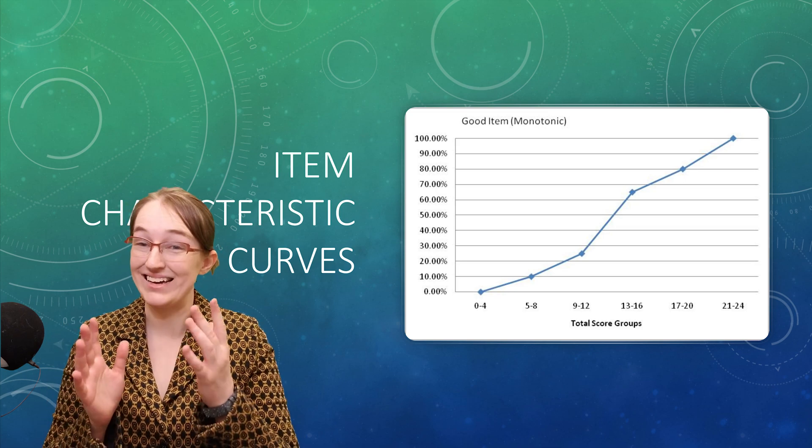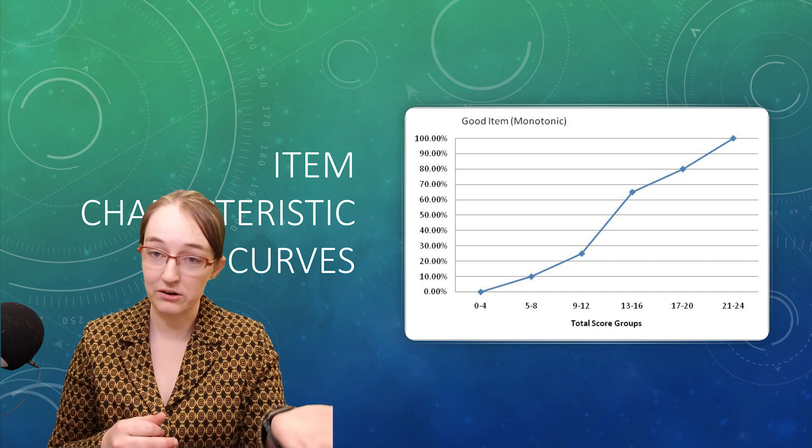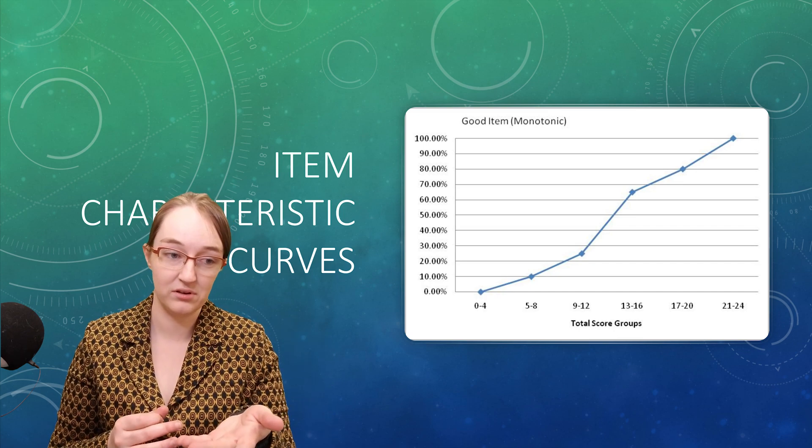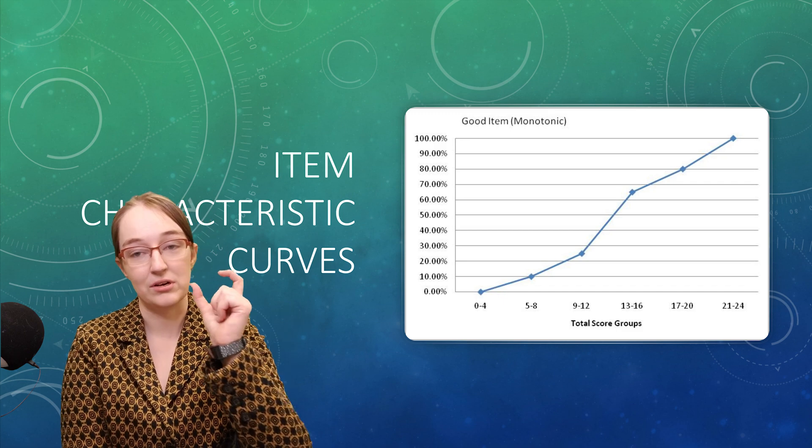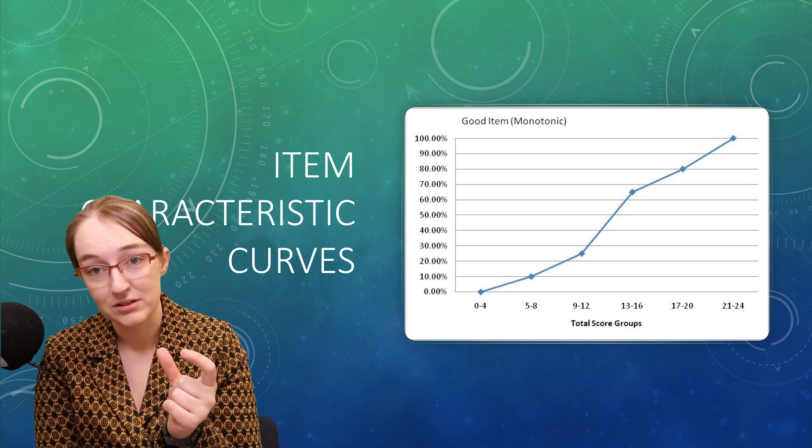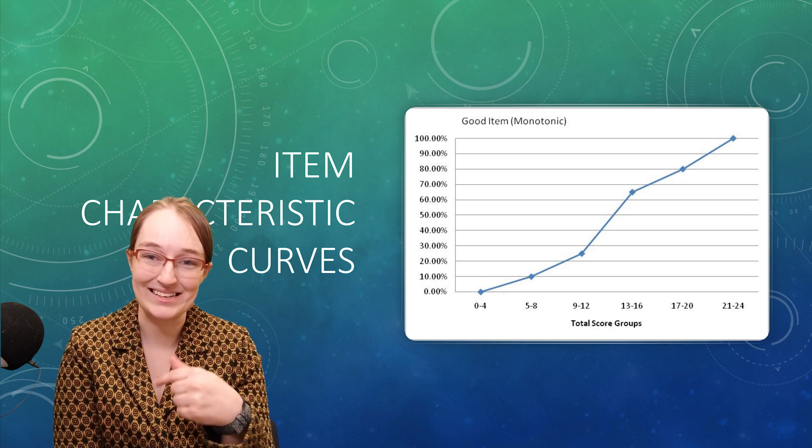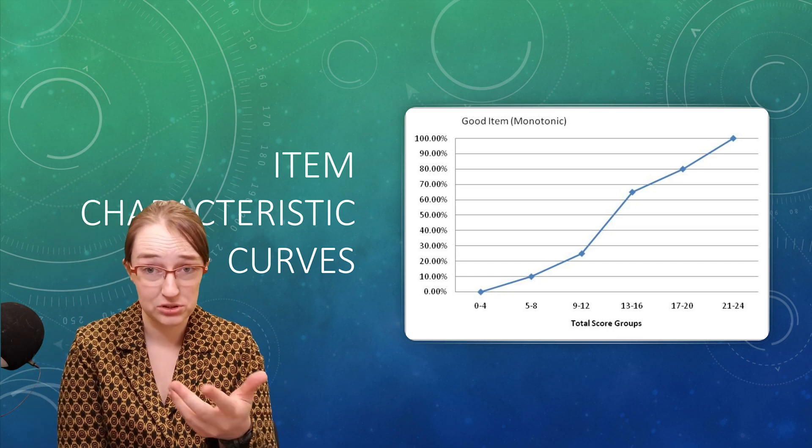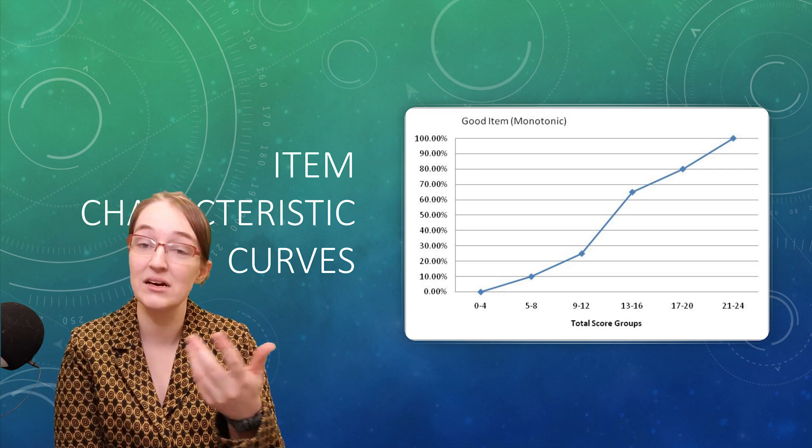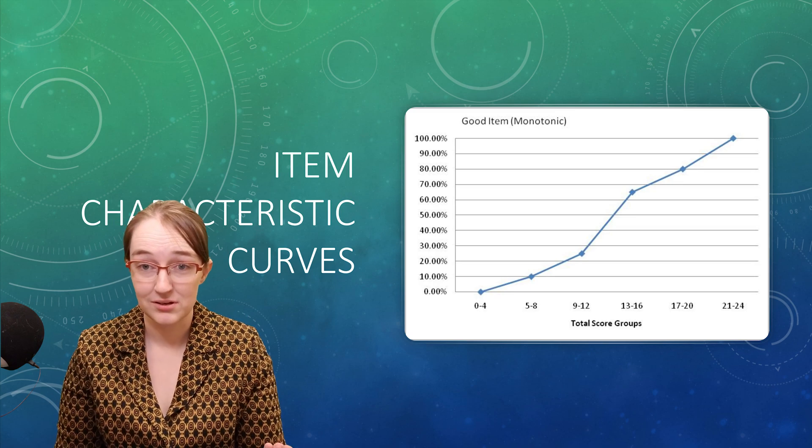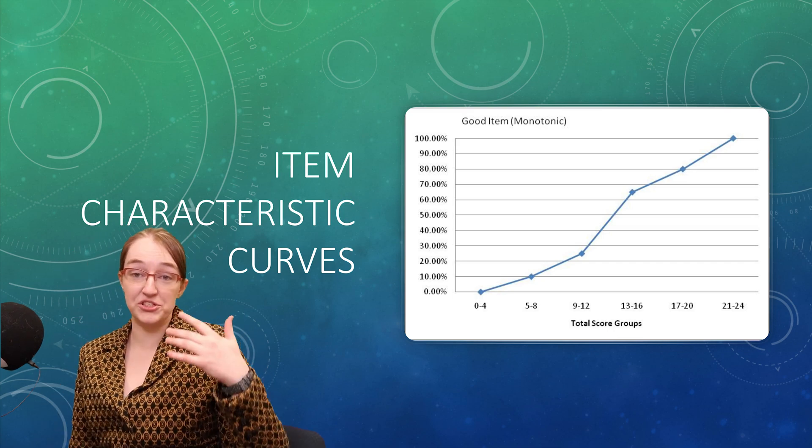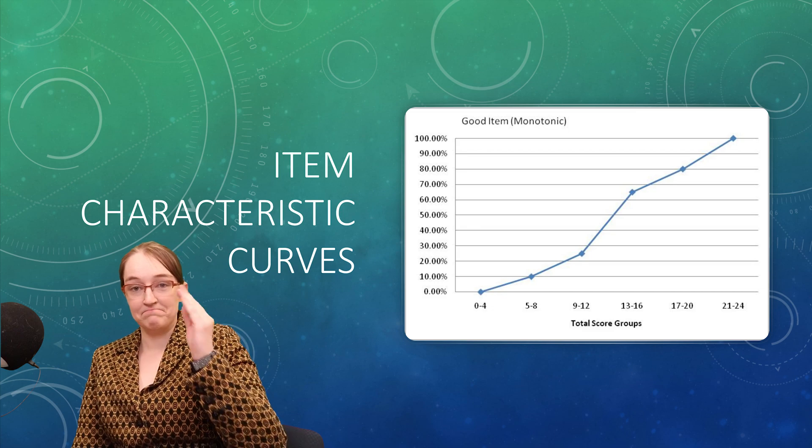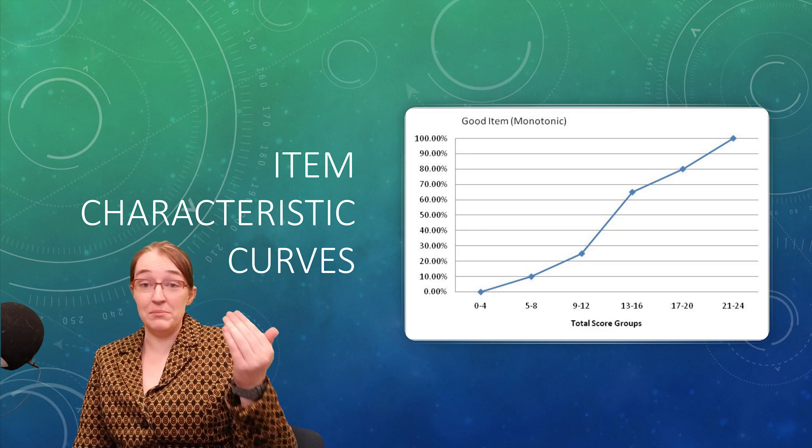So good items are monotonic. Here I've plotted the proportion of correct versus the total score within that group. We can see that when you're in a group that has a poorer total score, you are less likely to get this item correct than someone who has a higher total score, which is good. Why is that good? It indicates that your test performs the same way by question.